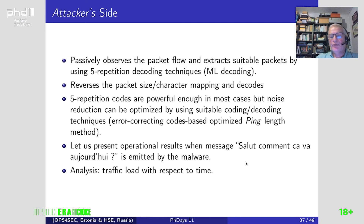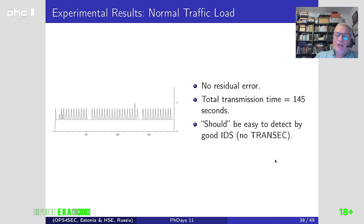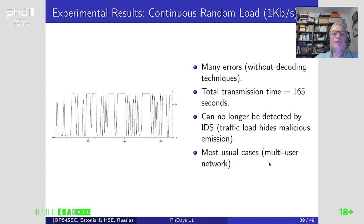Just imagine we want to encode the sentence 'Salut, comment ça va aujourd'hui?' — How are you today? We show different results depending on traffic load with respect to time. With no residual error, extracting the data takes 145 seconds — normally this should be detected by a good IDS. With a random load of 1 kbps, the total transcription time is slightly higher, but in this case it is no longer detected by IDS.